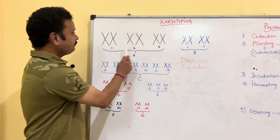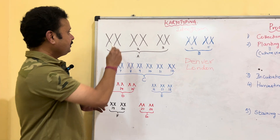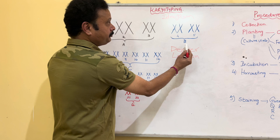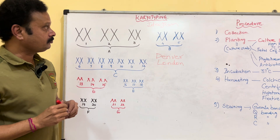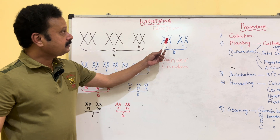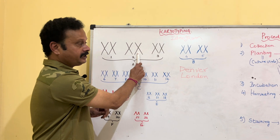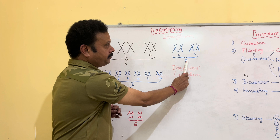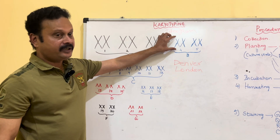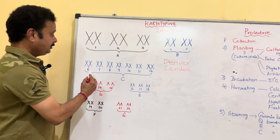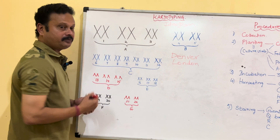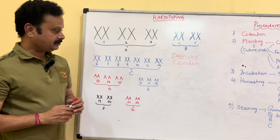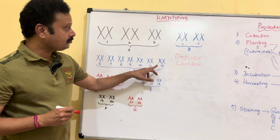In the A group, which includes the first three pairs of chromosomes, these are tall metacentric — shown here in black. The B group includes the fourth and fifth pair of chromosomes, which are fairly long submetacentric — shown in blue. The C group, which includes the sixth pair to the twelfth pair, are medium-sized submetacentric chromosomes. Notably, the X chromosome belongs to this C group.